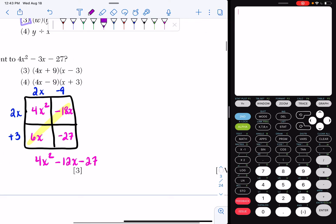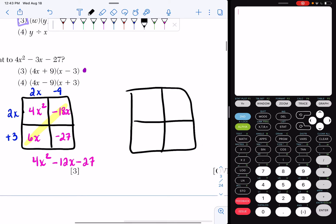Now I'm going to do it on choice 3. So I have 4x plus 9 times x minus 3. So x times 4x is 4x squared. x times 9 is 9x. Negative 3 times 4x is negative 12x. And then negative 3 times 9 is negative 27.